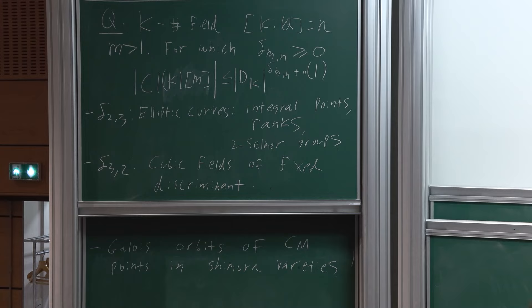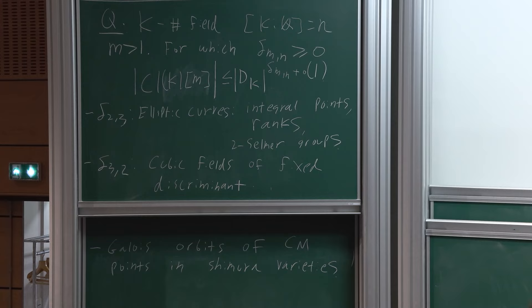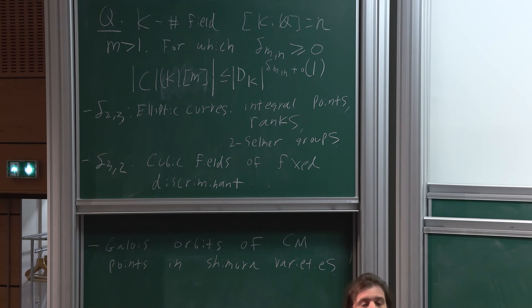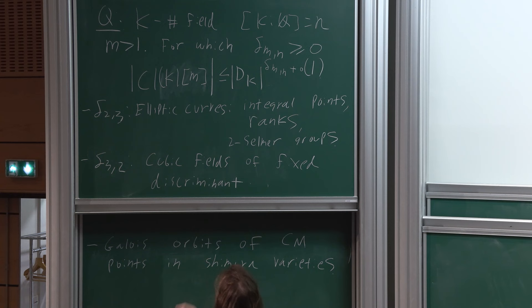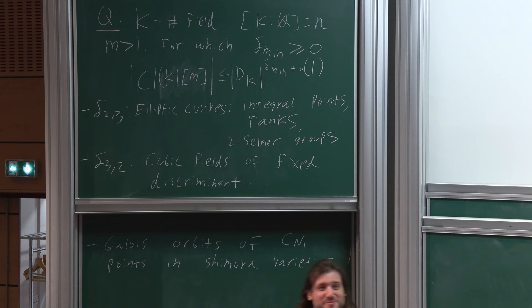To clarify: the cardinality of the M-torsion in this group, and D is the discriminant. Is there a reason that these quantities δ_MN are not zero? In fact, the conjecture is that they are supposed to be zero—which is well-pointed-out. As is often the case in analytic number theory, what should be the case is very, very far from what we can prove.